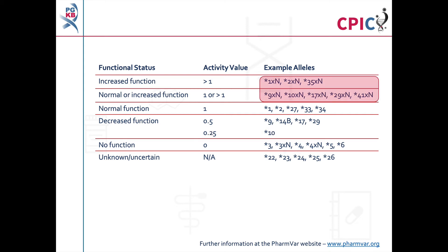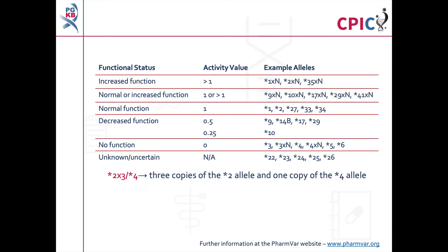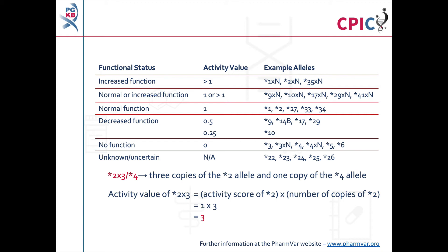It is important to note that patients can carry multiple copies of CYP2D6. Reports in the scientific literature have described cases where up to 13 copies of CYP2D6 were present in a patient's genome. Alleles present in multiple copies are given the suffix XN, where N is the number of copies present. For example, a patient with the genotype star 2x3 star 4 has 3 copies of the star 2 allele and 1 copy of the star 4 allele. The activity score of alleles present in multiple copies is calculated by multiplying the activity score for the allele by the number of copies; in this case, star 2x3 equals 1 multiplied by 3, which equals 3. Further information about CYP2D6 alleles can be found at the PharmVar website.